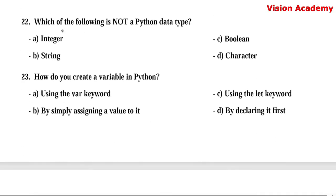Question number 22. Which of the following is not a Python data type? Option A: integer. Option B: string. Option C: boolean. Option D: character. Here, option D — character — is not a data type in Python.